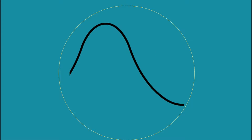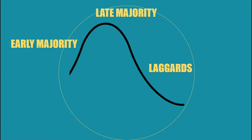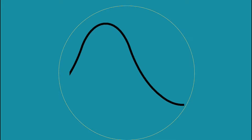The mainstream market consists of early majority, late majority, and laggards. You don't have to try very hard to reach the laggards because they're going to resist almost everything — when you reach early majority and late majority successfully, the laggards will follow no matter what. The mainstream market always seeks references before buying a product; they want to know what they are buying is actually good, and they will not tolerate any unfinished product or prototype. They require finished products.